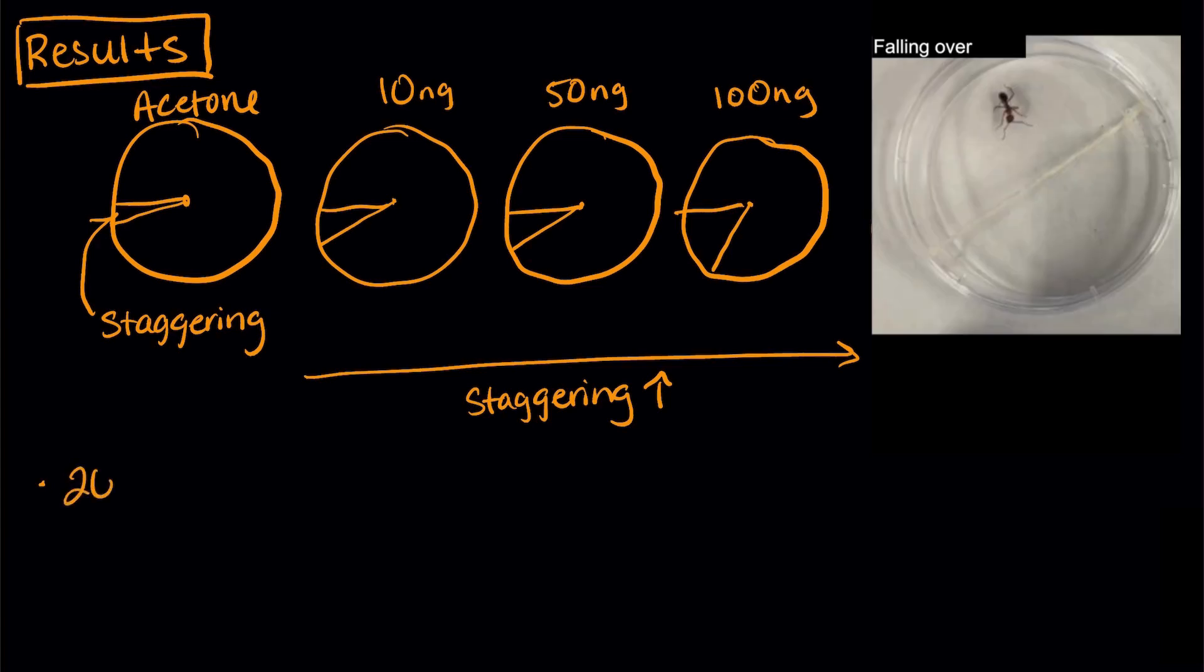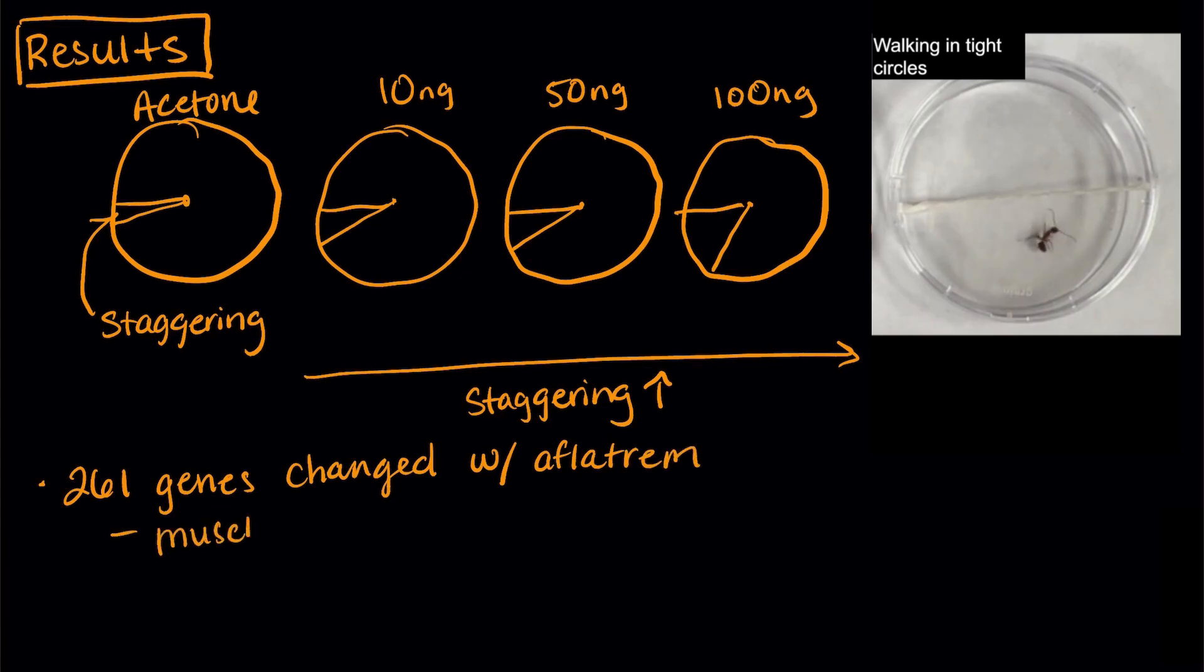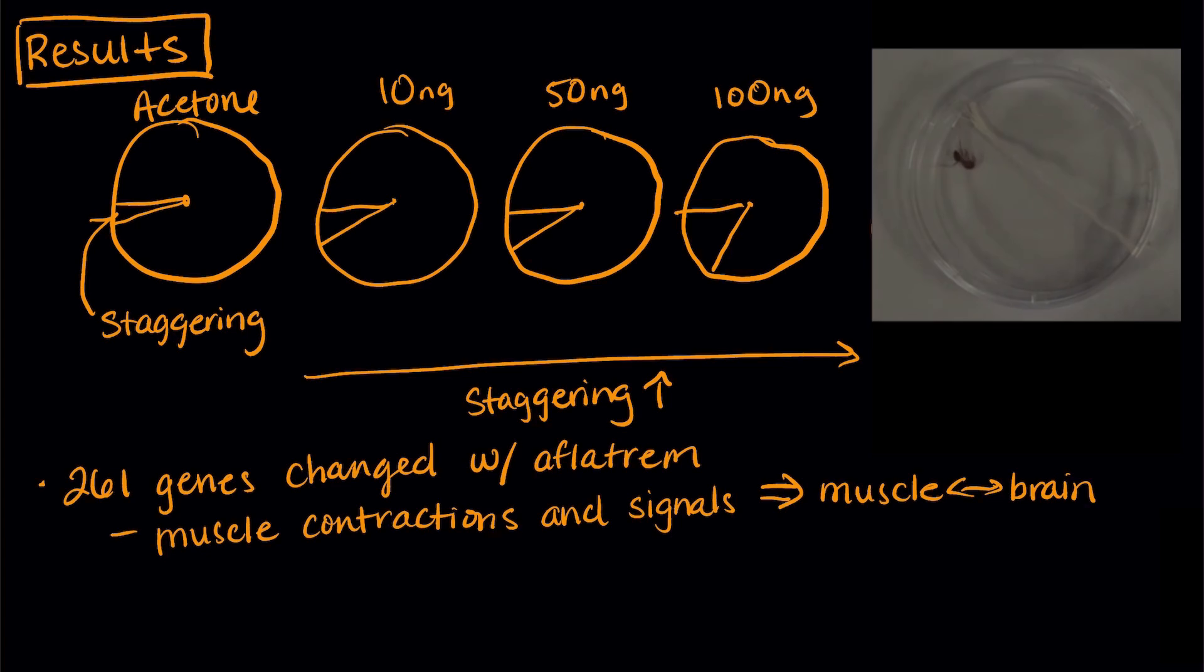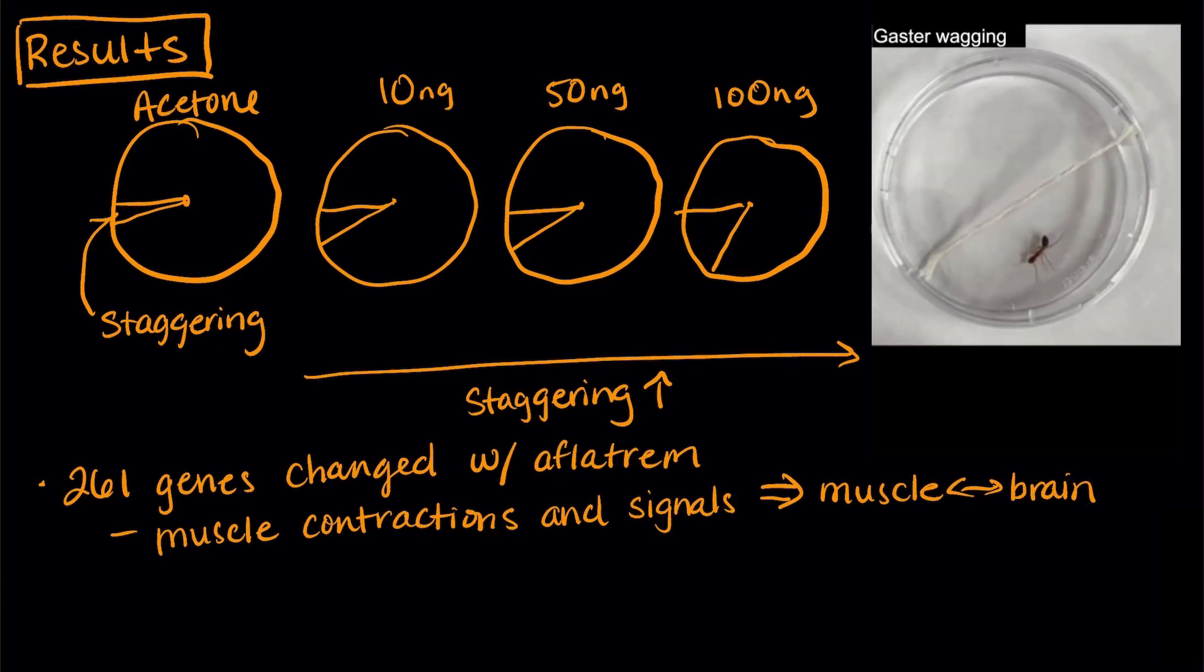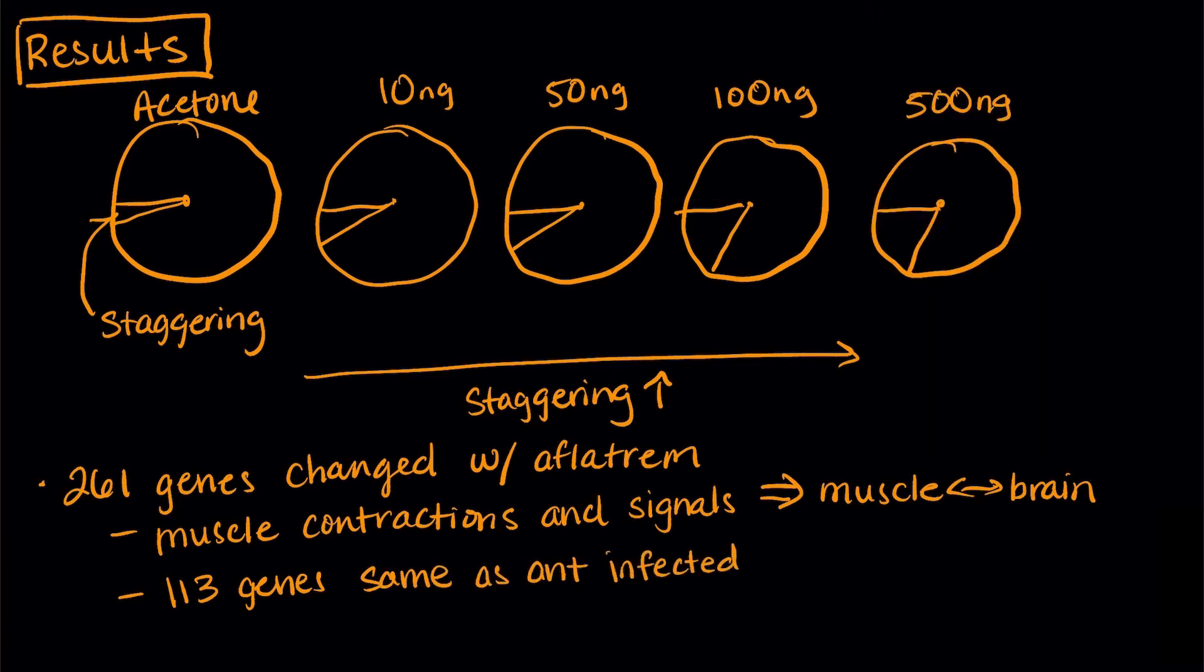The researchers also found that 261 genes changed in the ants that were injected with afflatrem. The genes controlled muscle contractions and signals between muscles and the brain. Some genes also controlled aspects of smell and communication. 113 of these genes were also changed when the fungus infected the ants.